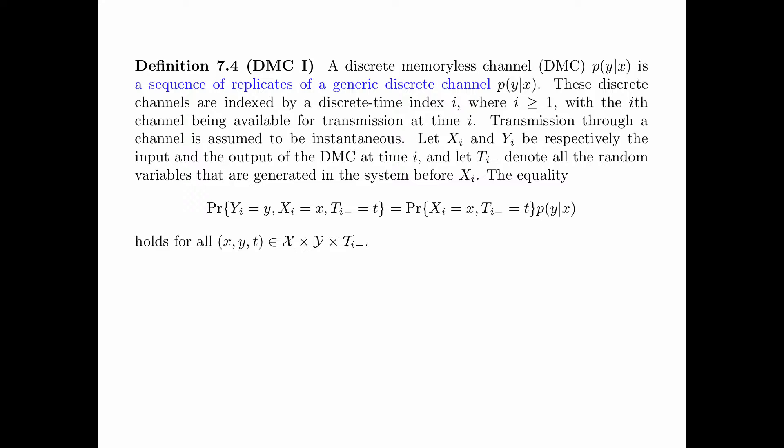Definition 7.4 is the formal definition for DMC1. A discrete memoryless channel PY given X is a sequence of replicas of a generic discrete channel PY given X. These discrete channels are indexed by a discrete time index i, where i ≥ 1, with the i-th channel available for transmission at time i. Transmission is assumed instantaneous. The following equality holds for all x, y, and t: the probability that YI equals y, XI equals x, and TI minus equals t, is equal to the probability that XI equals x and TI minus equals t, times PY given X.